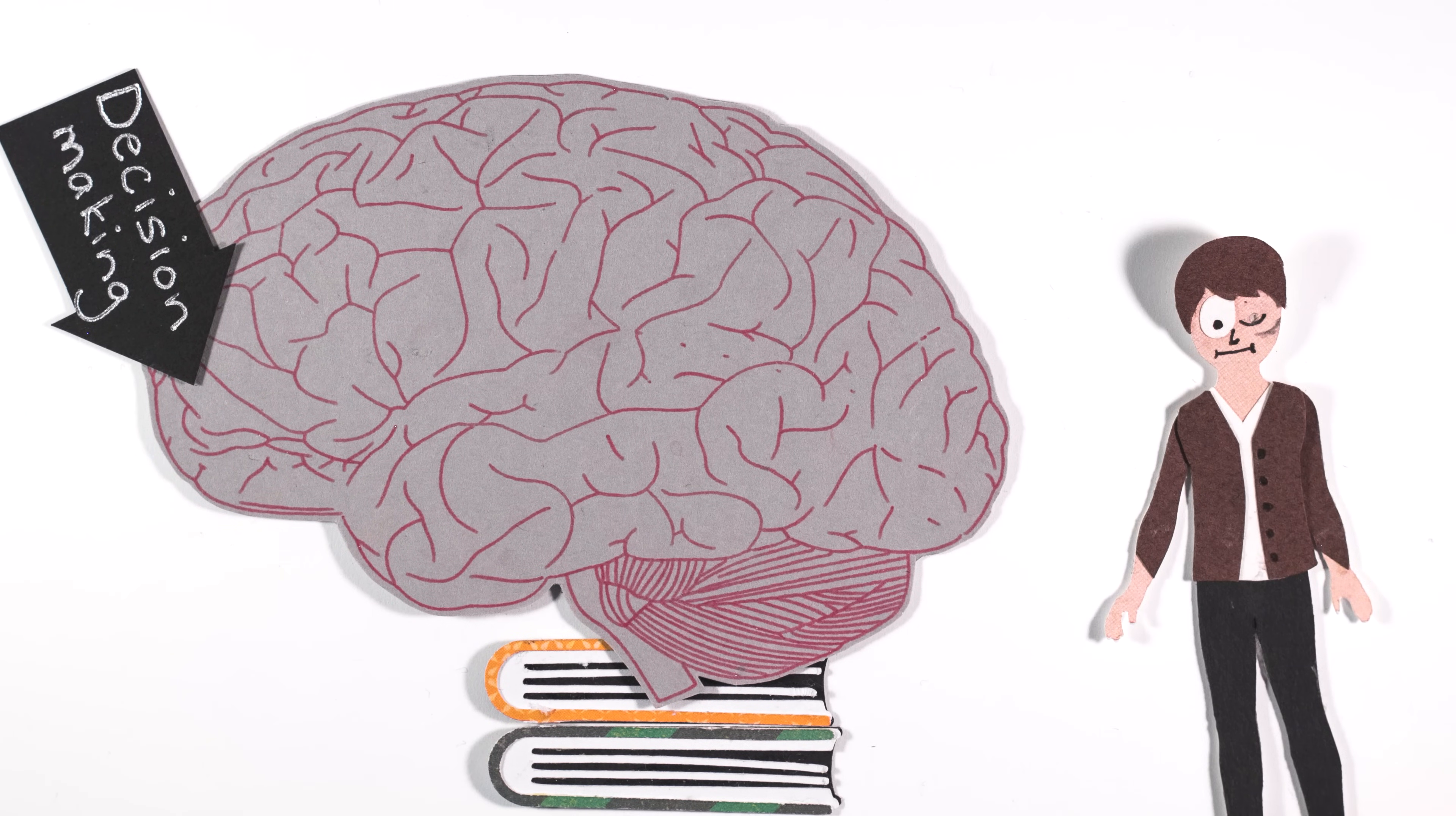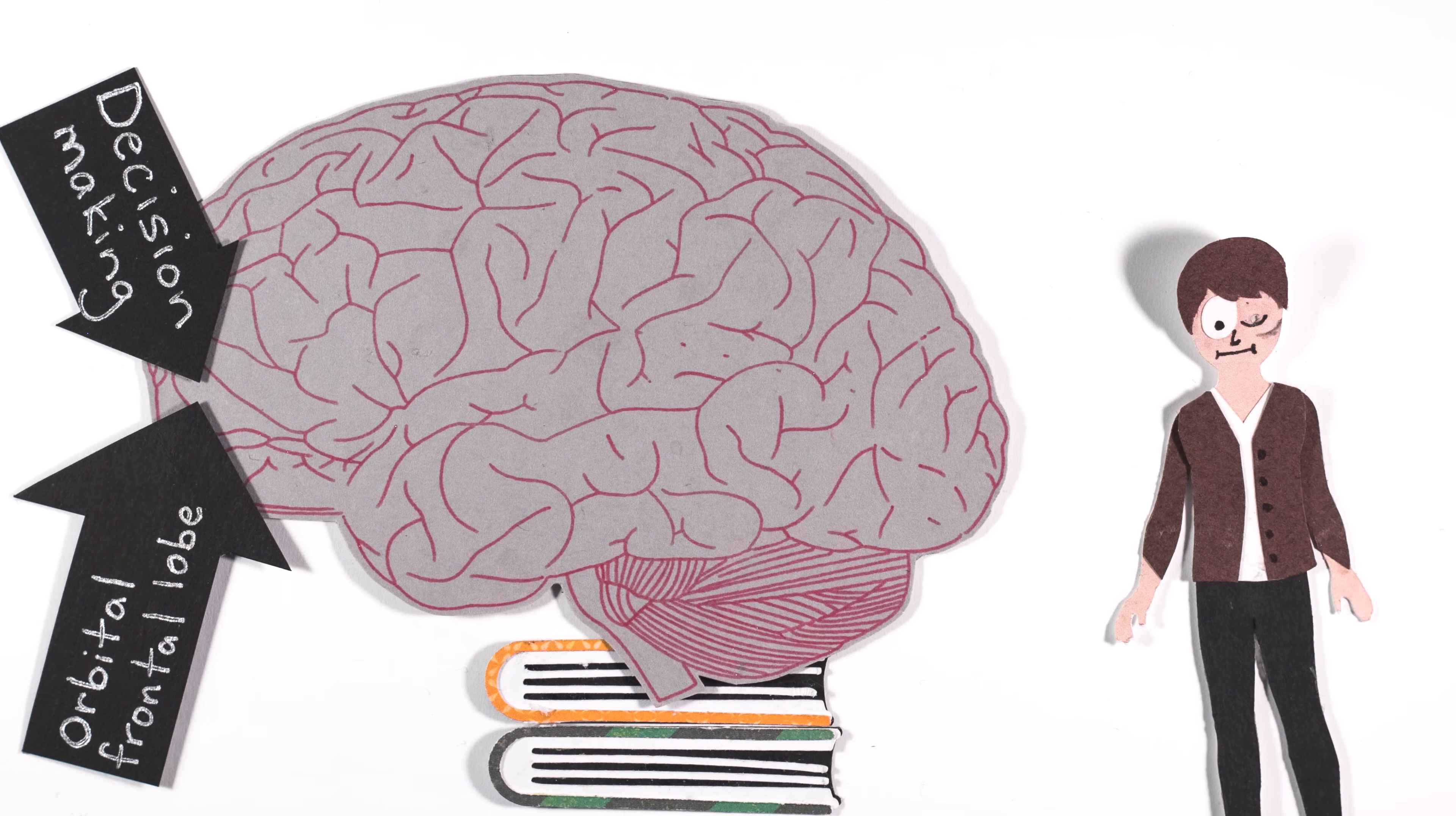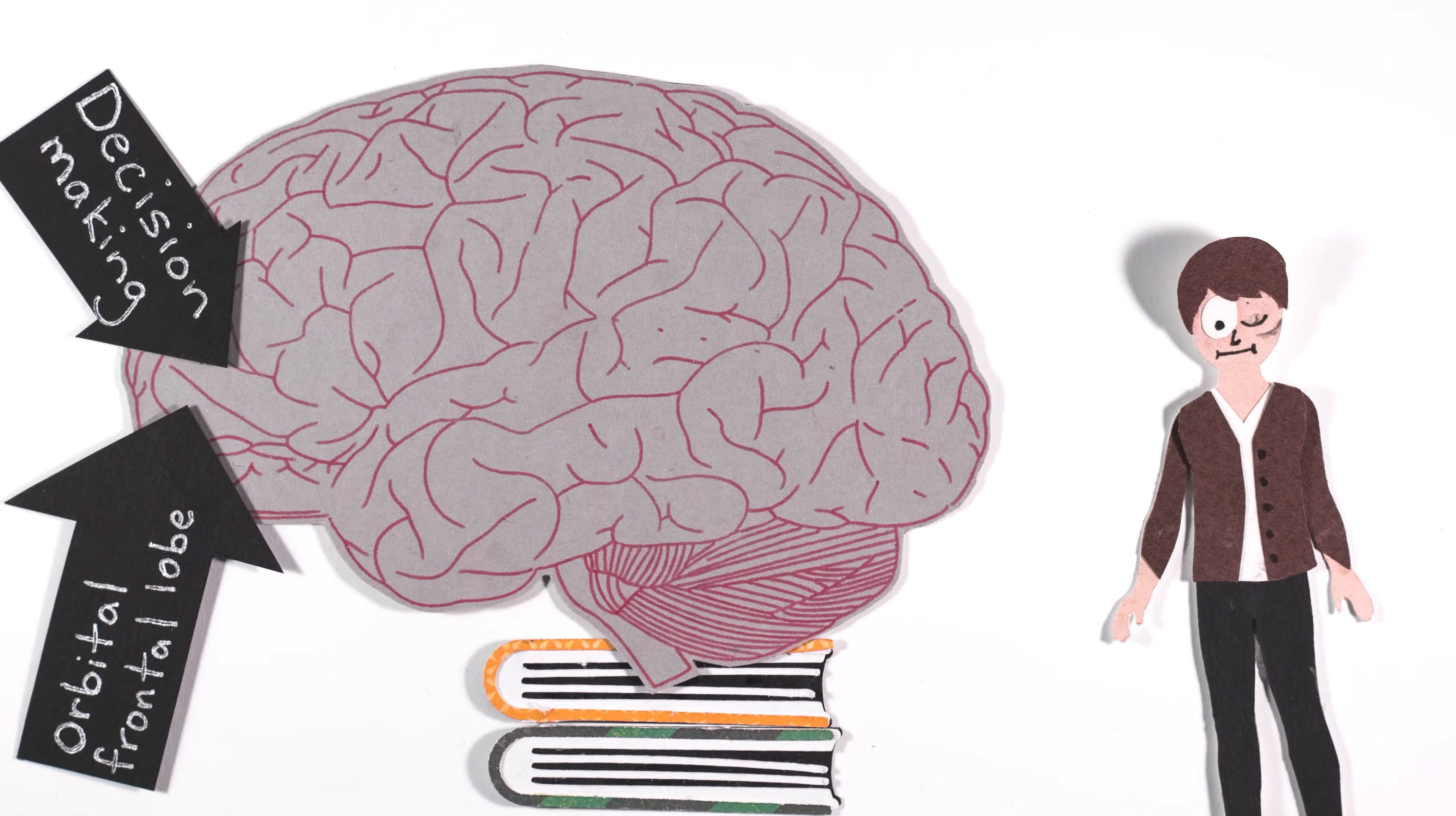More recent study in people with brain lesions suggests that the orbital frontal lobe, part of Gage's brain that was damaged, is super important in decision-making.